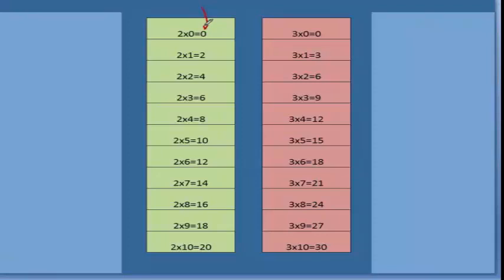We'll do what we call count-bys. 2 times 0 is 0, 2 times 1 is 2, 2 times 2 is 4, 2 times 3 is 6, 2 times 4 is 8, 2 times 5 is 10, 2 times 6 is 12, 2 times 7 is 14, 2 times 8 is 16, 2 times 9 is 18, 2 times 10 is 20.